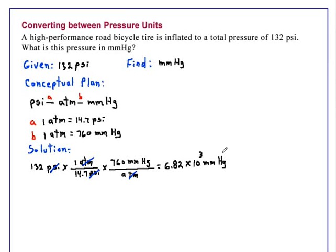Let's check to see if our answer makes sense. The units are correct—we're looking for millimeters of mercury, and we have millimeters of mercury. It's a relatively large number, 10 to the third, but that makes sense too because a millimeter of mercury is much smaller than a psi. So we feel confident that our answer is correct.